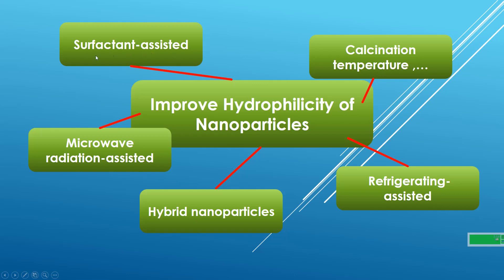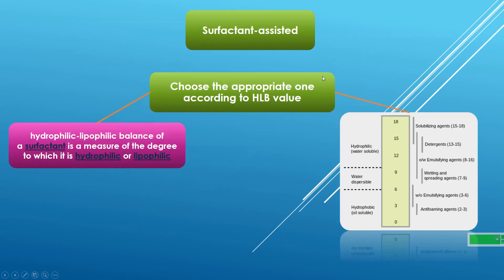In this session, I'm going to talk about the surfactant-assisted method. To choose the appropriate surfactant to improve hydrophilicity of nanoparticles, you should be familiar with the HLB value concept. HLB is an abbreviation of hydrophilic-lipophilic balance — a measure of the degree to which a surfactant is hydrophilic or lipophilic.